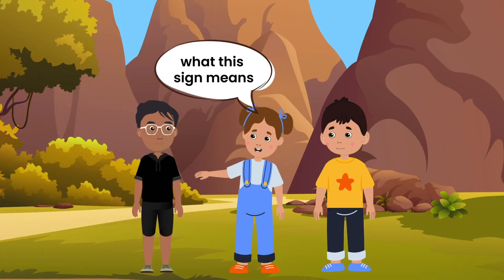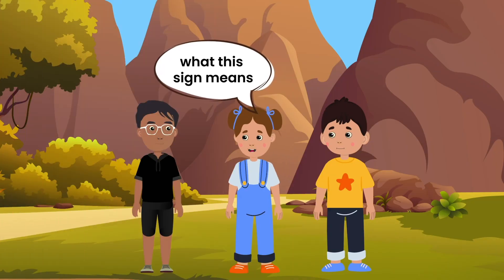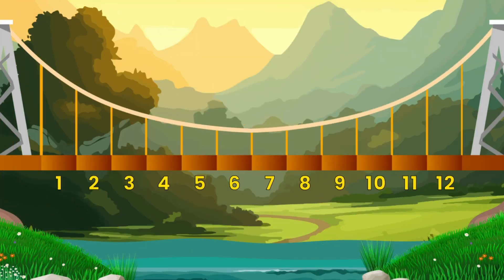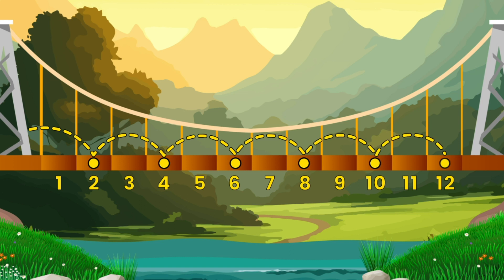So, Banu, what this sign means is that we should step on the 2nd, 4th, 6th, 8th, 10th and 12th plank because they are even.